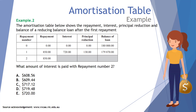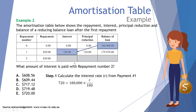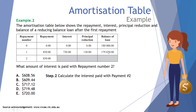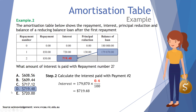Example two: the amortization table shows repayment, interest, principal reduction, and balance for a reducing balance loan after the first repayment. What amount of interest is paid with repayment number two? Step one: calculate the interest rate from payment one. Interest equals principal multiplied by rate over 100, and using the solve function we find the interest rate is 0.4 percent. Applying that to the previous balance of one hundred and seventy nine thousand eight hundred and seventy dollars gives interest of seven hundred and nineteen dollars and forty eight cents — option D.